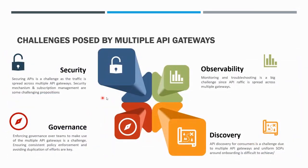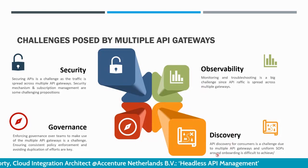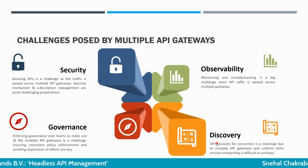The challenges posed by multiple API gateways include: implementing security in a uniform manner — how the consumer will be authenticated and authorized, and what subscription management will be used. Governance is a big challenge — defining do's and don'ts and enforcing them across various platforms. Observability — monitoring and logging and how they help in troubleshooting. And finally, discovery — how consumers come on board, discover the right APIs, and start using them.